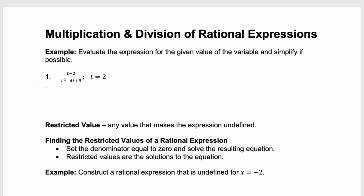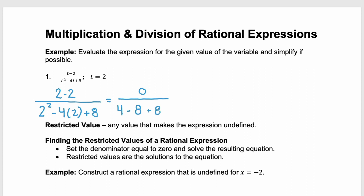In example 1, we're given this rational expression, t minus 2 over t squared minus 4t plus 8, and we're told to evaluate when t equals 2. All we do is replace every t in that expression with a 2. We'll have 2 minus 2 in the numerator. The denominator becomes 2 squared minus 4 times 2 plus 8. Now we just simplify. The numerator, 2 minus 2, is 0. The denominator: 2 squared is 4, we multiply 4 times 2 which is 8, and we add an 8. The numerator stays 0, and the denominator 4 minus 8 plus 8 simplifies down to 4.